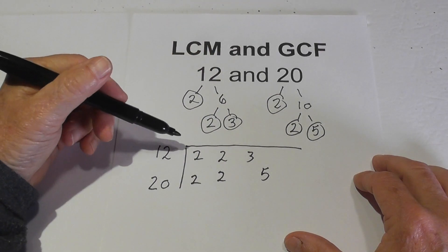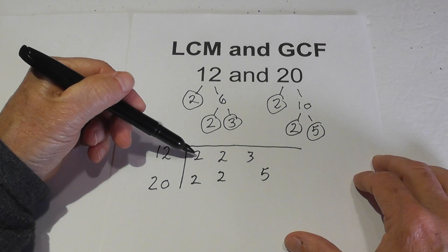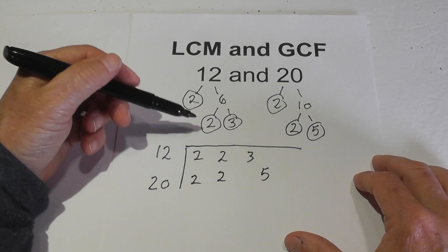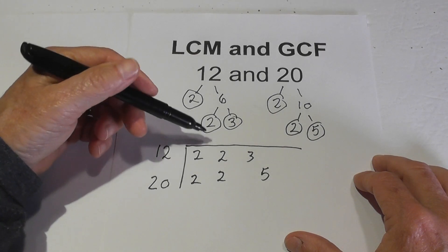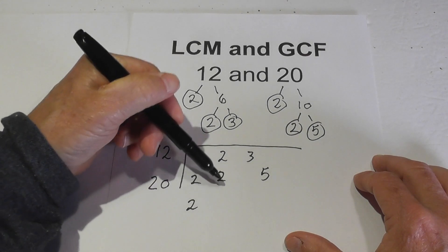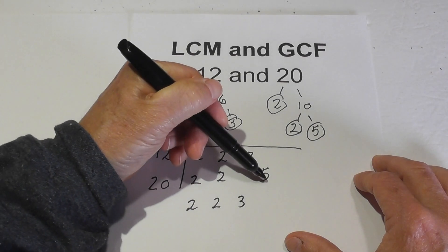So now for the LCM you basically multiply all this together, but you have one little rule, and that is if you have pairs or two in a column then you only bring one number down. So I have two 2s, so I'll bring down one 2, bring down a 2, bring down a 3, bring down a 5.